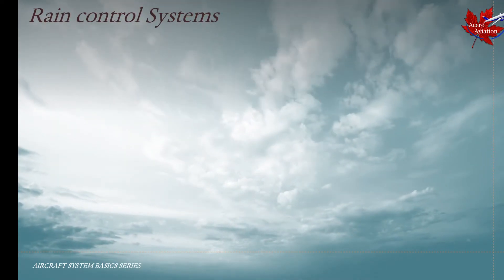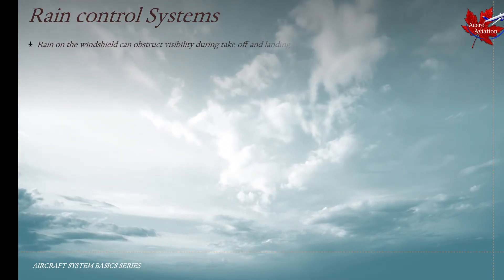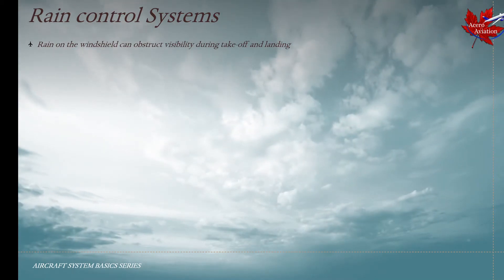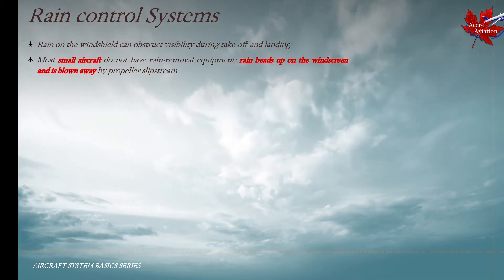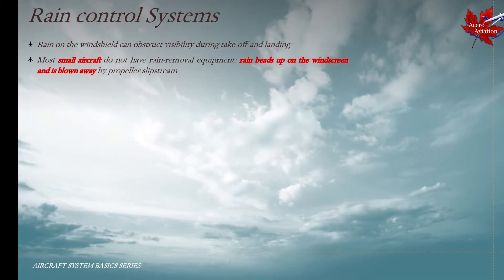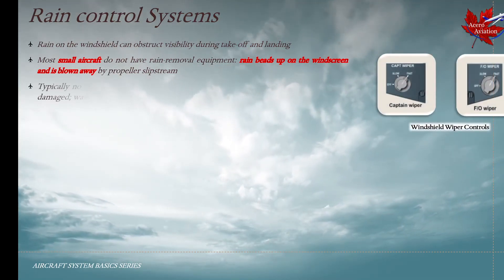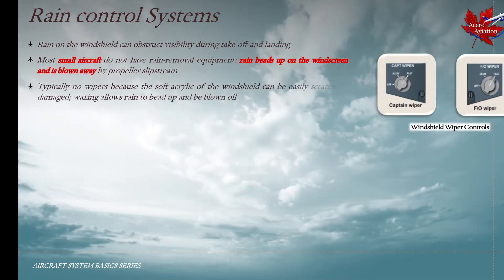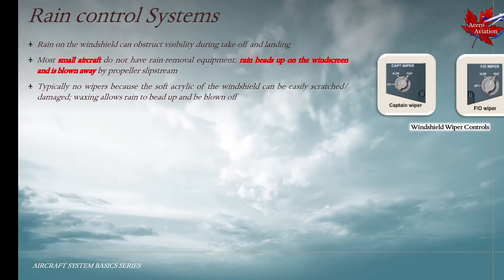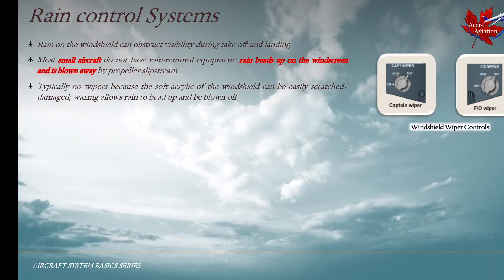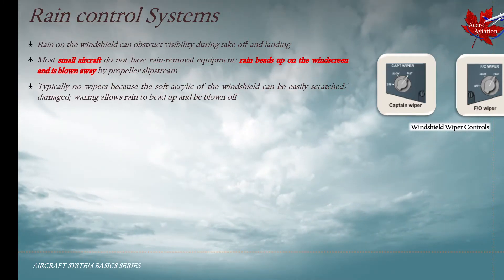We shall now discuss rain control systems on the aircraft. Rain on the windshield can obstruct visibility during take-off and landing. Most small aircraft do not have rain removal equipment; the rain usually beats up on the windscreen and is blown away by the propeller slipstream. Typically no wipers are installed because of the soft acrylic of the windshield, which can be easily scratched and damaged. Waxing allows the rain to beat up and be blown off the aircraft's windshield to prevent this from happening.